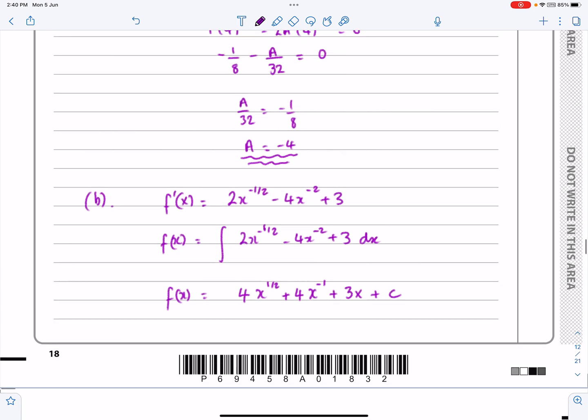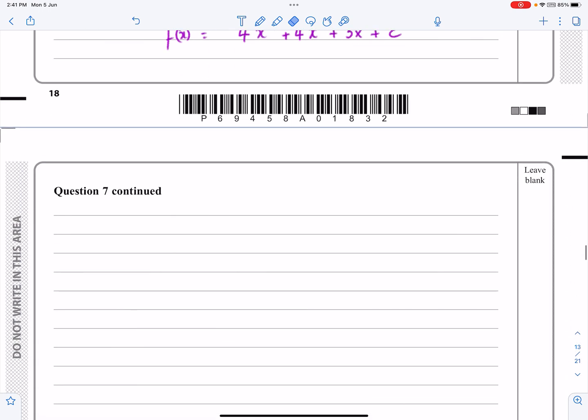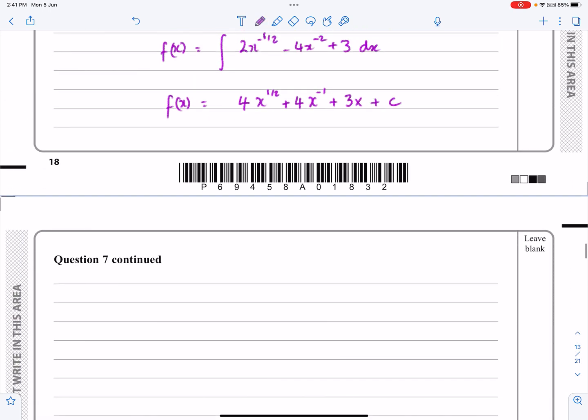So that's f(x), but I want to get rid of that constant, and I've now got this information that I can use to sort that out. So they're telling me that f(x) equals 8√3 when x is equal to 12.